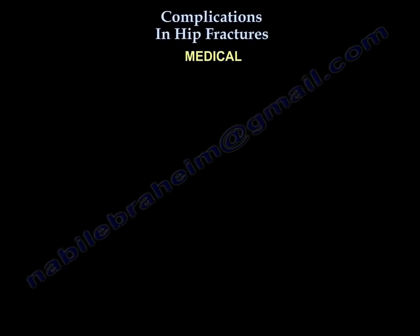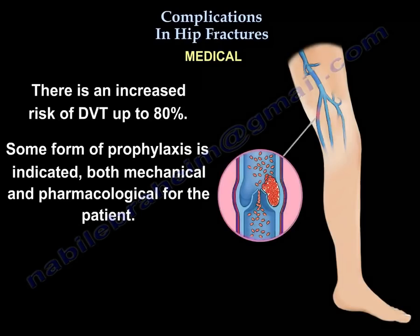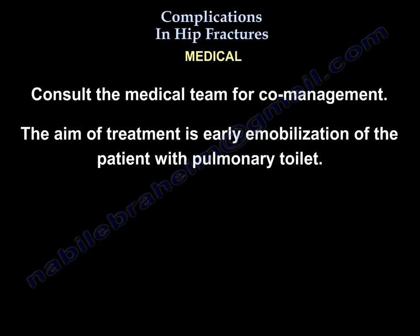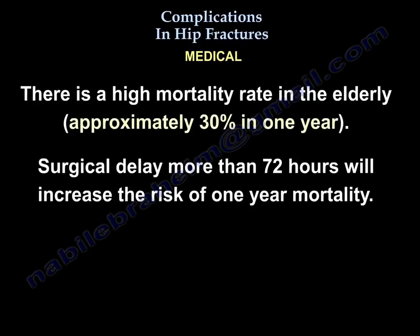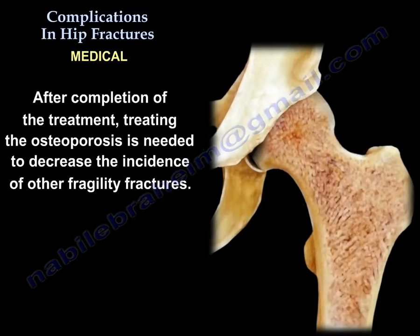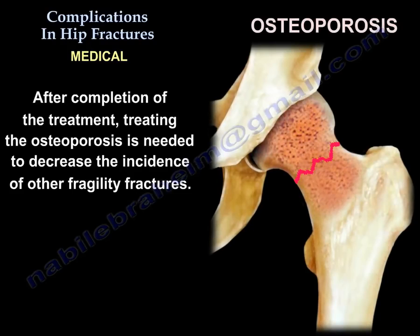Another complication is medical complications. There is an increased risk of DVT up to 80%, so some form of prophylaxis — both mechanical and pharmacological — is indicated. Consult the medical team for co-management, and the aim of treatment is early mobilization with pulmonary toilet. There is a high mortality rate in the elderly, and surgical delay of more than 72 hours increases the risk of one-year mortality. Treat osteoporosis to decrease the incidence of other fragility fractures.